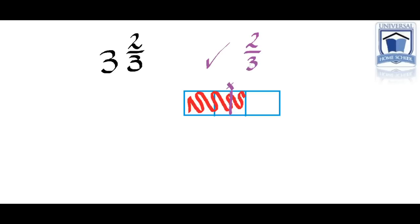So therefore we would add 1 to the 3 and make it 4. 2 thirds is greater than the half. So therefore 3 and 2 thirds would be 4 if we were to round it to a whole number. If it was less than a half, we'd keep it as 3.